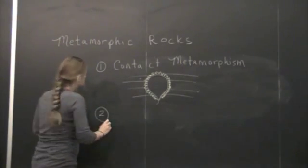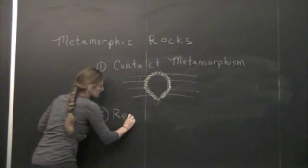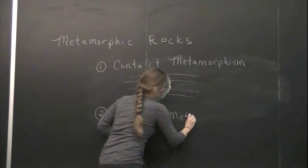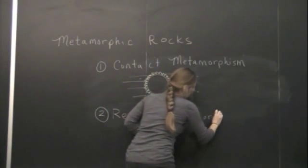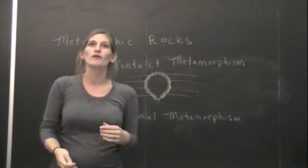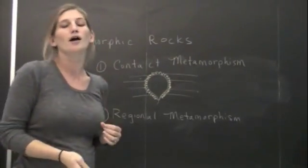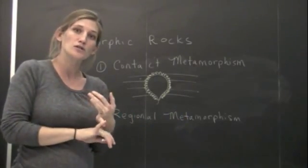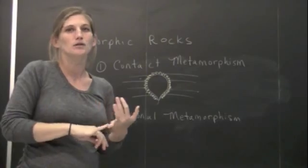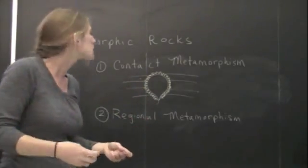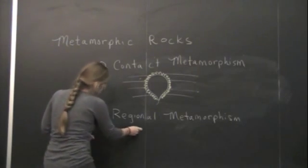The second thing that we can look at is going to be regional metamorphism. And this is going to be metamorphism that happens on a very large scale. We're talking about hundreds to thousands of kilometers that have been involved. It involves very high pressures that are associated with continental and oceanic collisions or continental-continental collisions. Just think convergent plate boundaries.